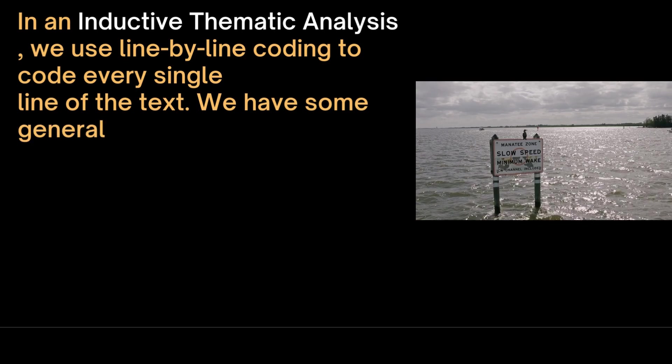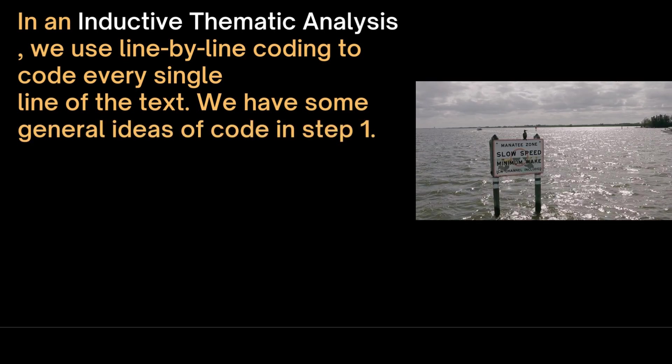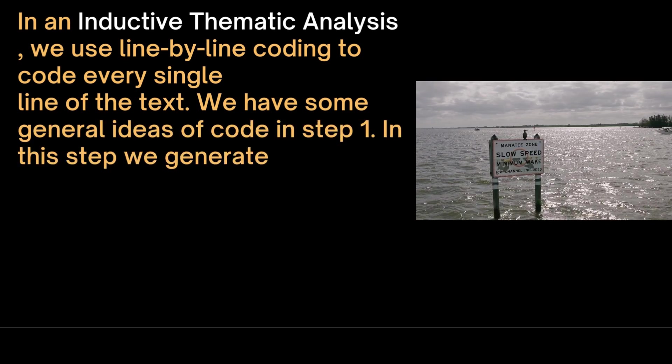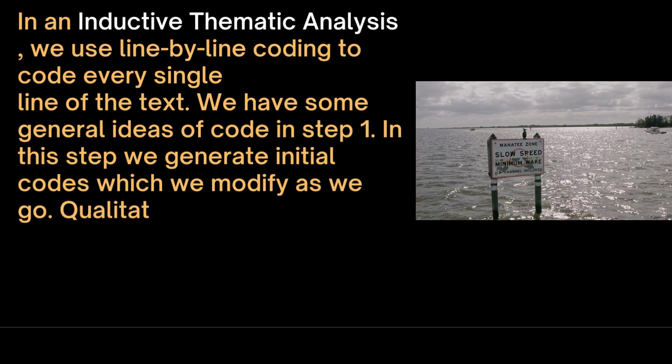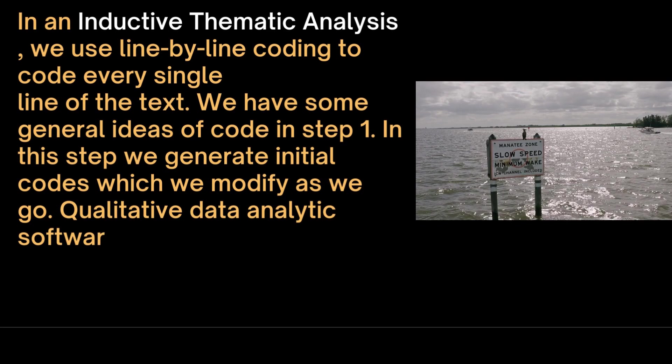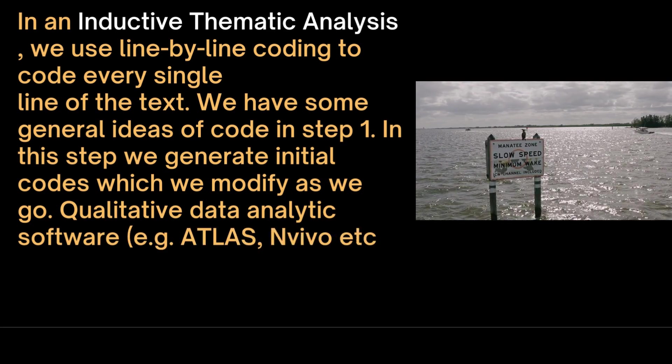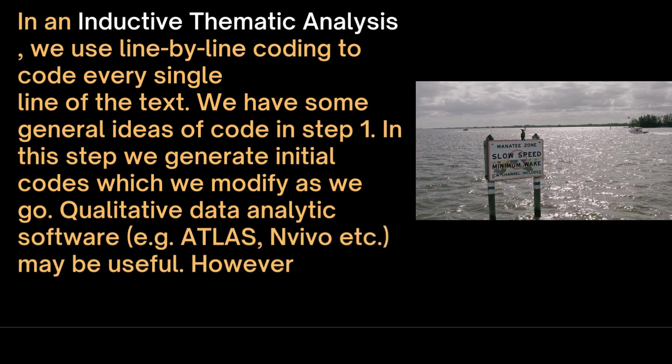We have some general ideas of code in step one. In this step, we generate initial codes which we modify as we go. Qualitative data analytic software—for example, ATLAS or NVivo—may be useful. However, other tools like Microsoft Excel can be used to code and identify themes.